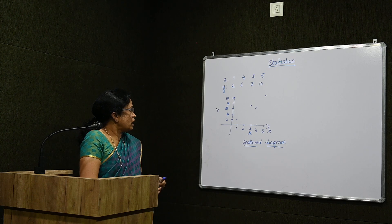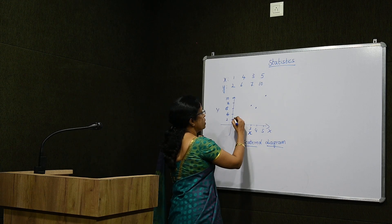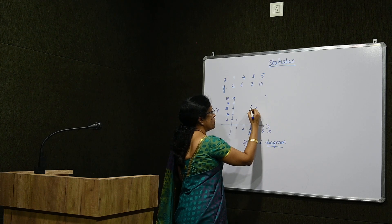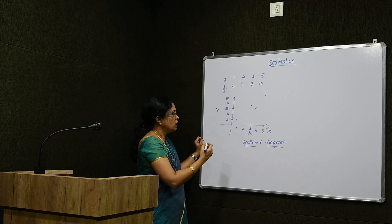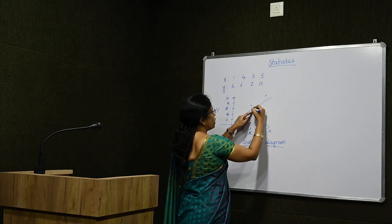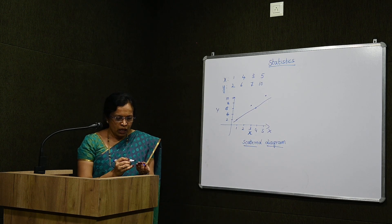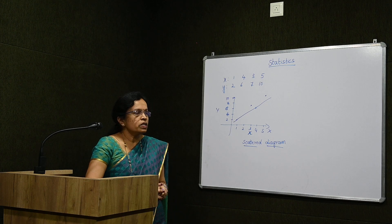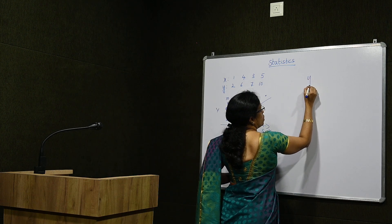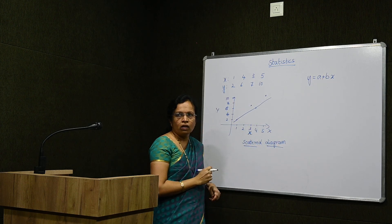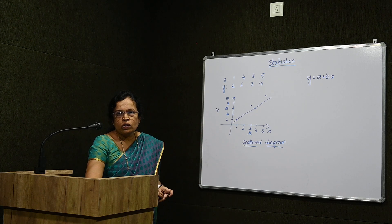Suppose we wish to fit a straight line. Not all points will lie exactly on the straight line — some points will be above and some below. The general form of a straight line is y is equal to a plus bx. This is the standard form, also called a linear curve. Here a and b are the parameters to be determined.